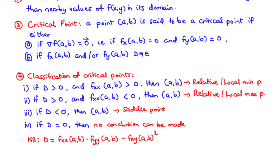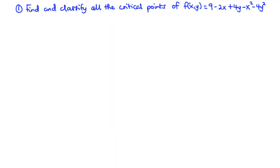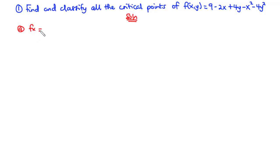Let's solve an example. We are going to find and classify all the critical points of the function f(x, y) = 9 − 2x + 4y − x² − 4y². To find the critical points, we find the first-order partial derivatives with respect to x and y and set them to zero.